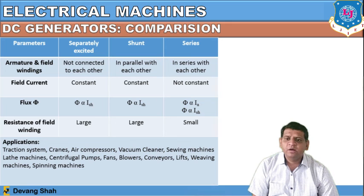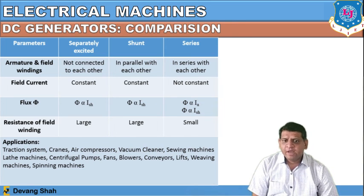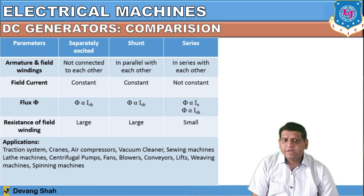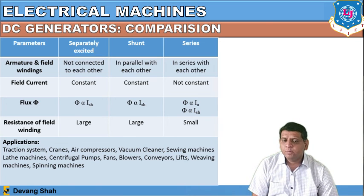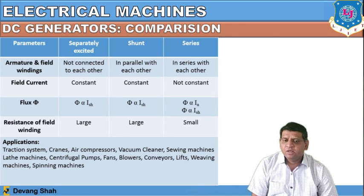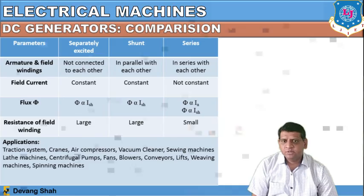The applications of DC machines include traction systems, trains, air compressors, vacuum cleaners, sewing machines, lathe machines, centrifugal pumps, fans, blowers, conveyors, elevators, weaving machines, and spinning machines.